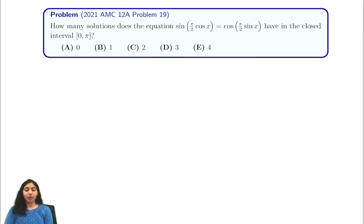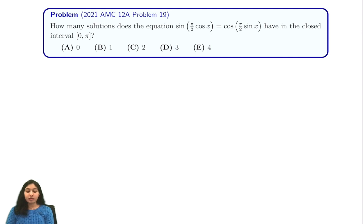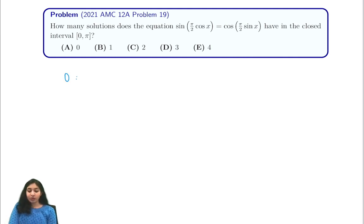Hi everyone. In this video we're going to be going through 2021 AMC 12B problem number 19. It says: how many solutions does the equation sine of (π/2 · cos x) equals cosine of (π/2 · sin x) have in the closed interval zero to pi?